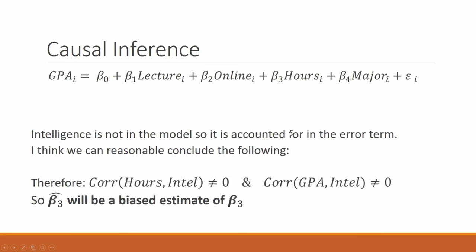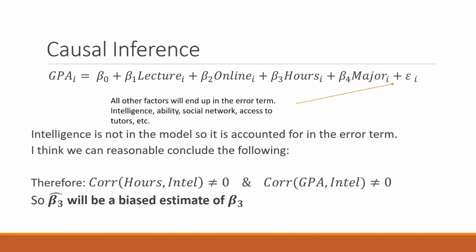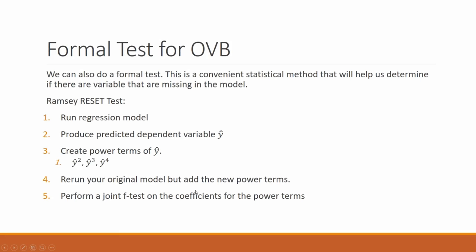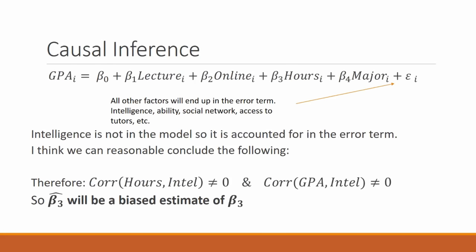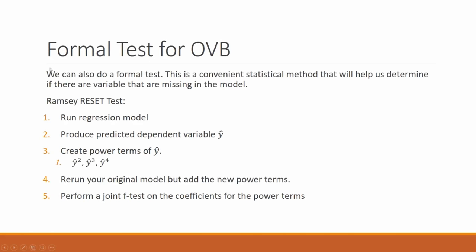Therefore, the correlation between hours and intelligence won't be zero, and the correlation between GPA and intelligence won't be zero — which means the estimate of beta 3 will be biased. Beta 3 hat will be a biased estimate of beta 3. So we have two examples of why we might have omitted variable bias. We can also use a formal test: the Ramsey RESET test. This is a statistical procedure to formally test for whether there are missing variables — specifically whether we're missing polynomial terms from the data.